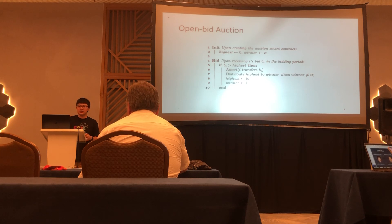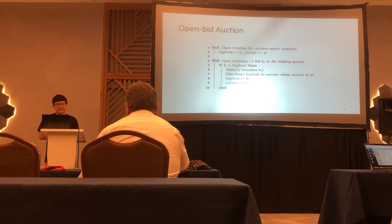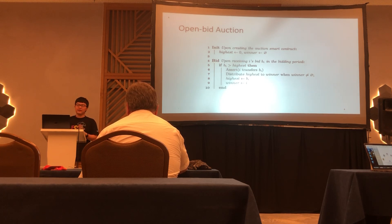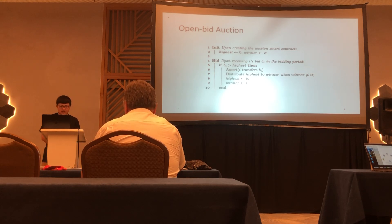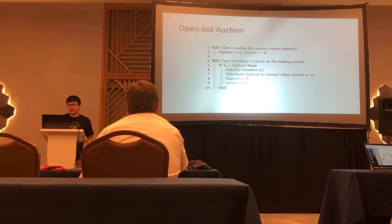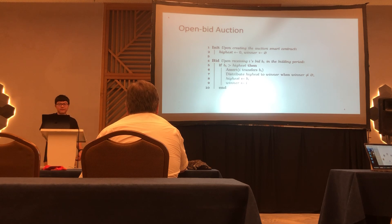We can initialize two variables: the highest and the winner. Initially we set highest to zero and winner to empty. Then for each new bid, we update the highest and the winner if the bid is larger than the previous highest. We require the bid to transfer money to the smart contract and distribute money back to the previous winner if there is one. Then we update the highest and the winner accordingly.